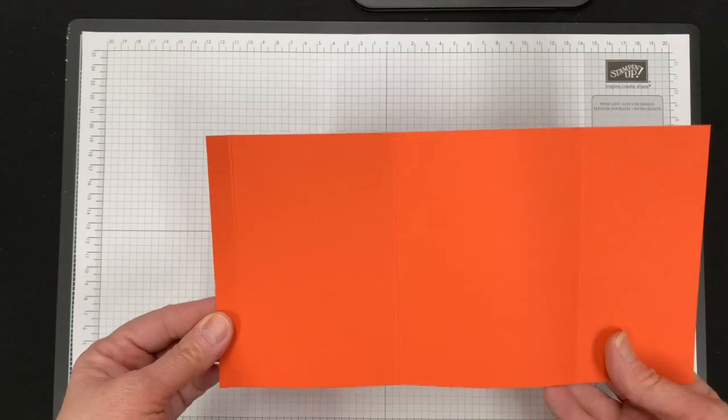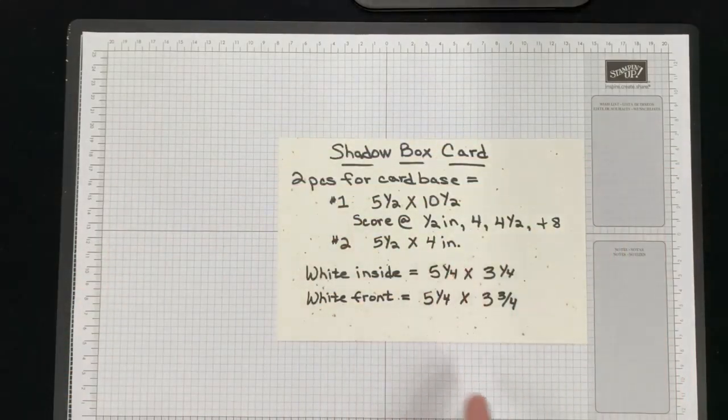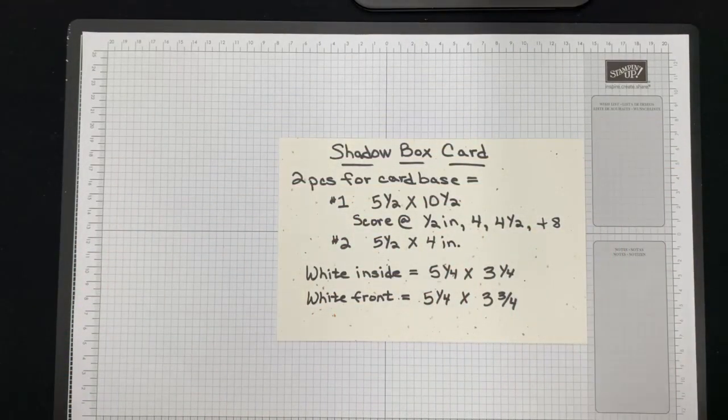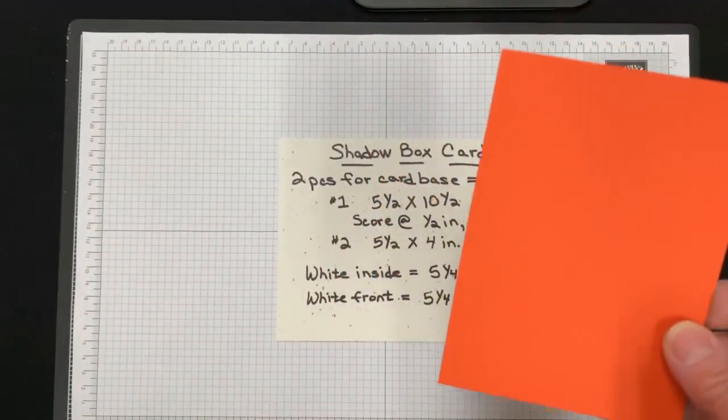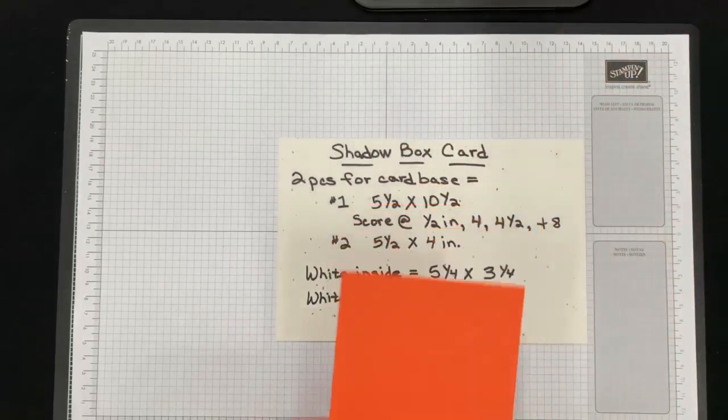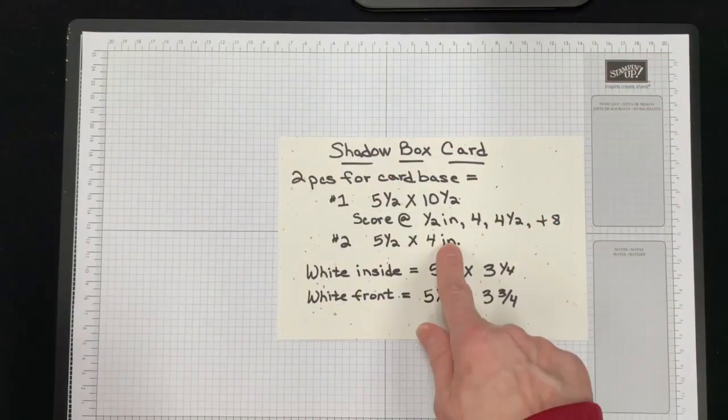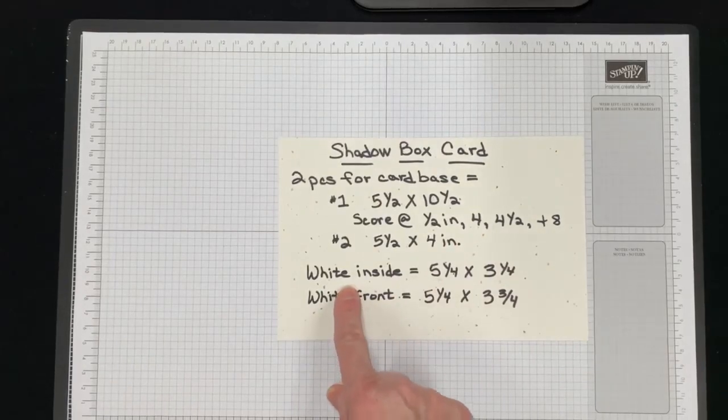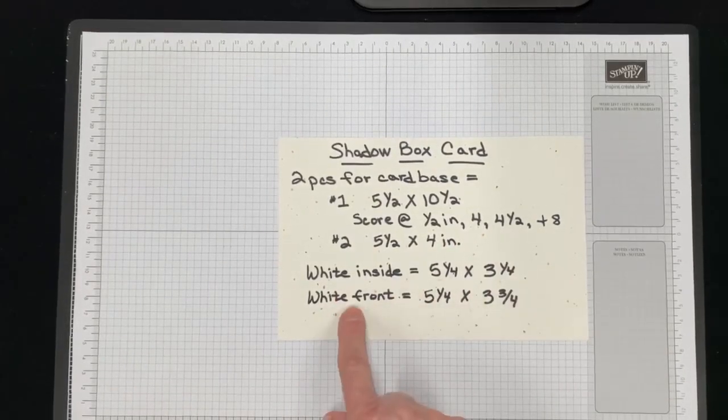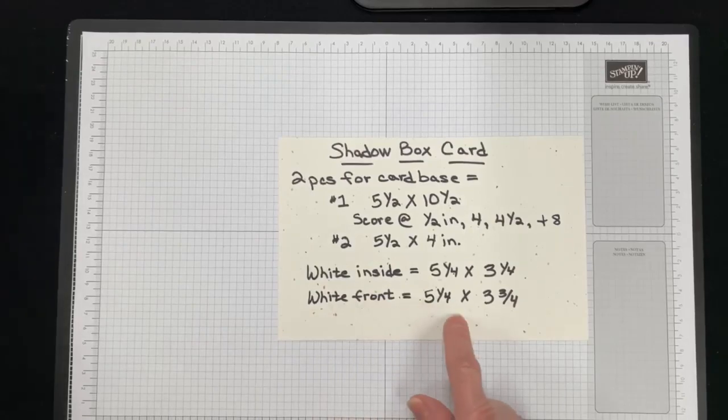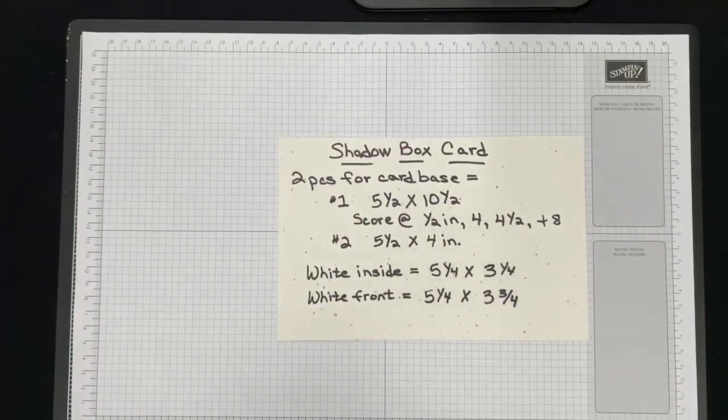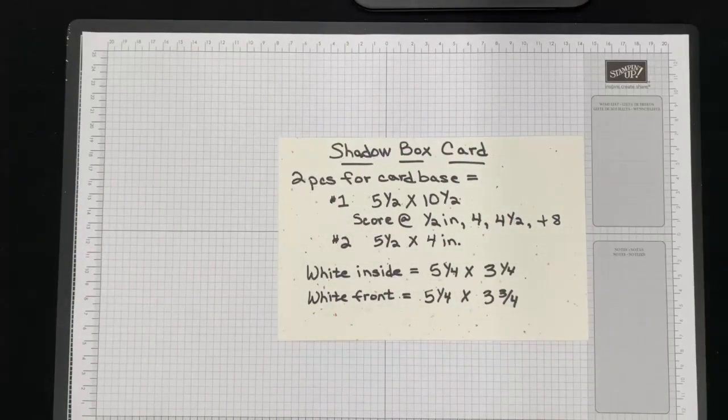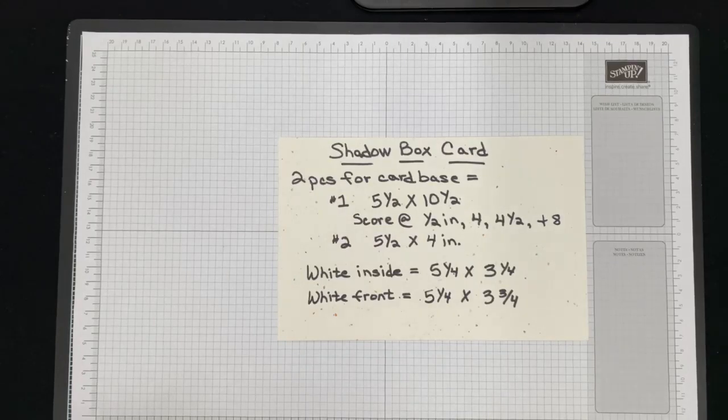I've written those out for you, and then you're going to have the same color, whatever cardstock you use, the same color for your front. That front piece is five and a half by four inches. The inside white piece that you decorate is five and a quarter by three and a quarter, and then the white front piece is five and a quarter by three and three quarters. That's pretty much your dimensions in a nutshell. If you want to take a picture of that or whatever, I'll leave that for just a second longer.